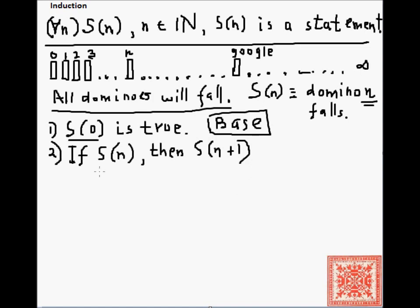The first one is called the base, and the second one, in the second statement, this statement s is often called hypothesis, or inductive hypothesis. So, you may frequently encounter inductive proofs that state by the inductive hypothesis, and so on and so forth. That's what they mean. They assume that s(n) is true, and try to prove that s(n+1) is true.